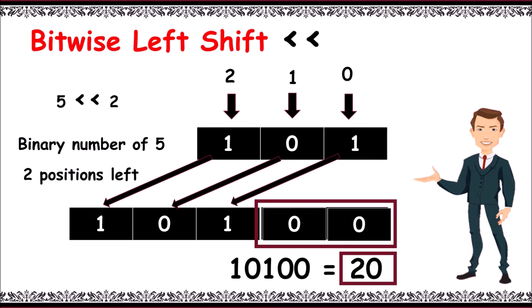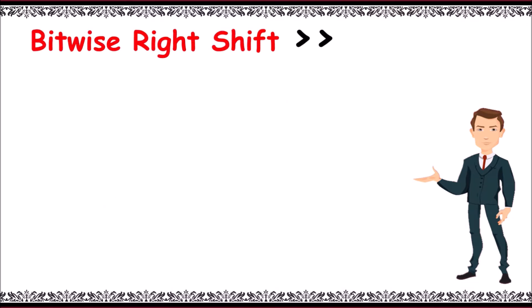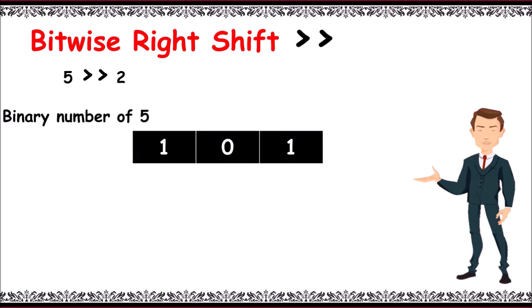Now bitwise right shift - by the name we can understand shifting bit positions to its right. For example, 5 greater than greater than 2. Binary number of 5 is 1 0 1. The positions are 0, 1, 2 from right.